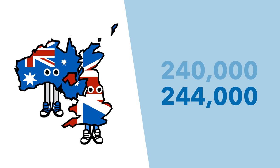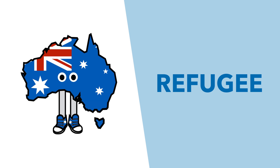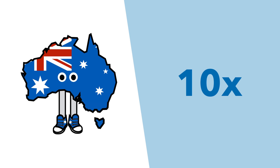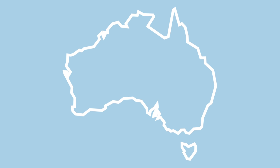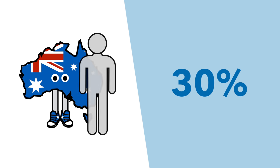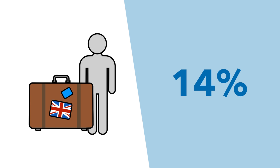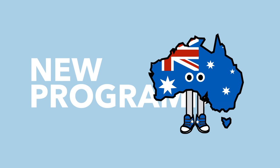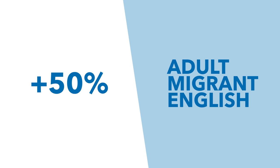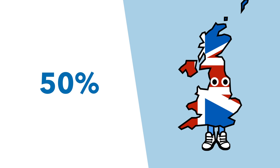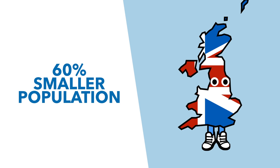This means the UK would have to have a net migration of 600,000 people to be equivalent with Australia. Australia's refugee resettlement plan is 10 times as big as the UK's per capita, and the opposition Labour government want to increase it by 70%. Australia doesn't let in more migrants just because it's got more space — 90% of their migrants end up in one of two cities, Sydney and Melbourne. This is why 30% of Australia's population was born overseas, compared to just 14% of the UK's.